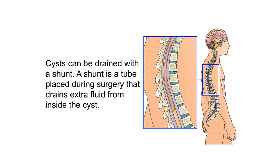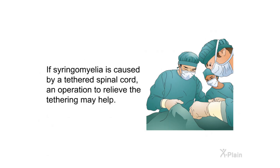Cysts can be drained with a shunt, a tube placed during surgery that drains extra fluid from inside the cyst. If syringomyelia is caused by a tethered spinal cord, an operation to relieve the tethering may help.